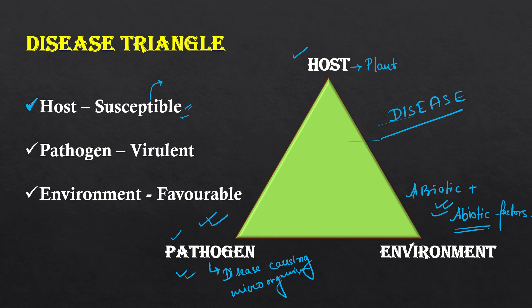Next, coming to the pathogen — the pathogen will have to be virulent. A non-virulent pathogen cannot cause disease. So, to successfully cause disease in the host, the pathogen must be virulent. Then coming to the environment — a favorable environment is a must. If the environment is not favorable, the pathogen will not be able to grow and thrive in the host and thus produce disease. Therefore, environment should favor the growth of pathogen, otherwise disease will not be produced.